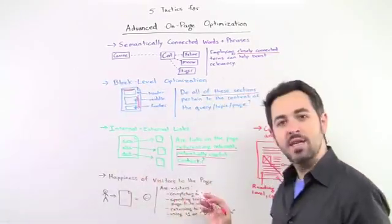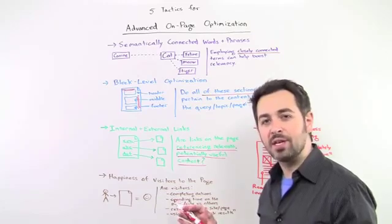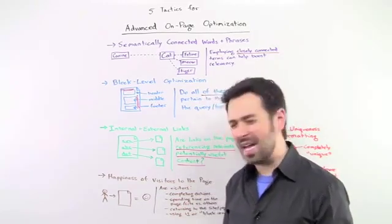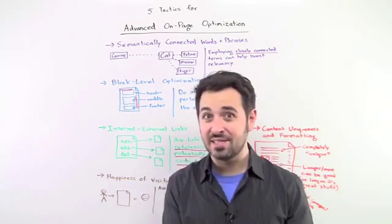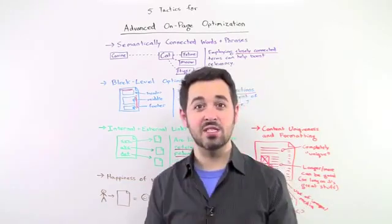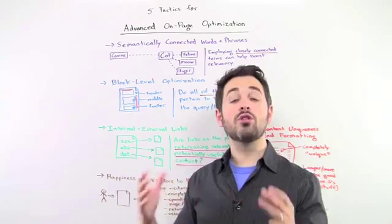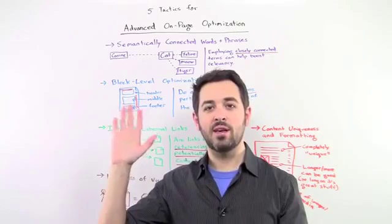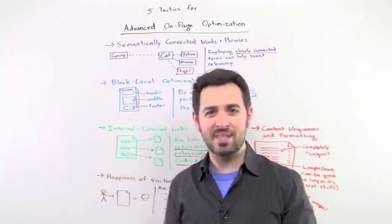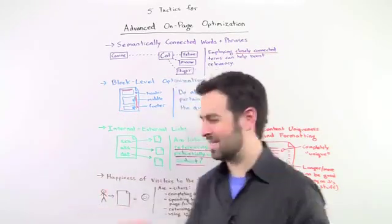Number four on the list, the happiness of visitors to a page. I know what you're thinking. It's sort of like, wait a minute. That's not on-page optimization. That's more like conversion rate optimization. Yes, but it matters for rankings because Google is looking so much at usage and user data. I'm going to ask Kenny, who's filming this video. I'm going to wave, Kenny. That's a great wave. Did you all see that? He looked great. It was amazing.